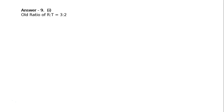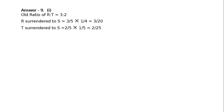Answer 9, first part. Old ratio of R to T is equal to 3:2. R surrendered to S means one-fourth of his share multiplied by 3/5 (old share of R). Surrendered one-fourth means multiply. That is equal to 3/20. And T surrendered one-fifth of his share.